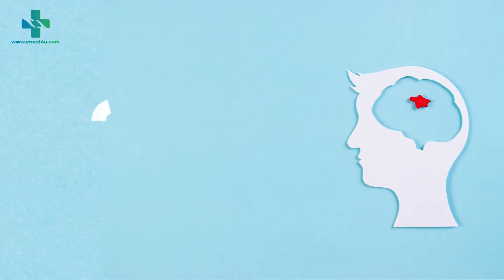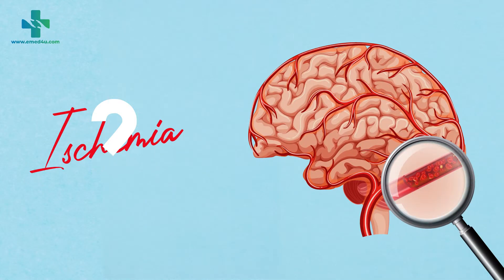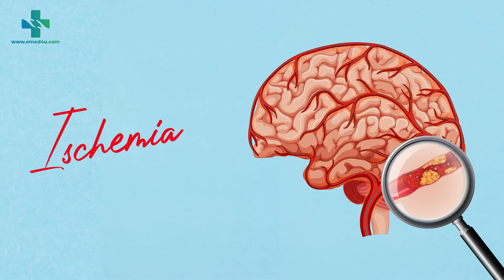Number two: ischemia is a term that refers to a reduction in blood supply to a tissue or organ which causes a reduction in the oxygen supply. This causes damage to that tissue or organ which could be temporary or permanent.